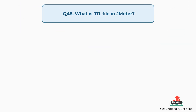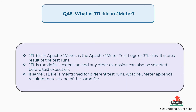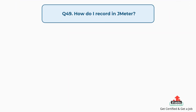Question 48: What is a JTL file in JMeter? A JTL file in Apache JMeter stands for JMeter Text Logs. It stores the results of test runs. JTL is the default extension, though any other extension can also be selected before test execution. If the same JTL file is specified for different test runs, JMeter appends the resultant data at the end of the same file.